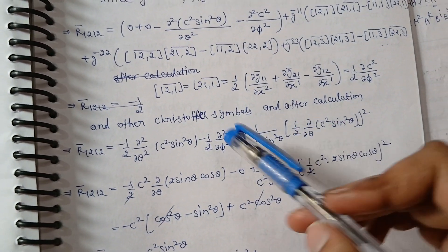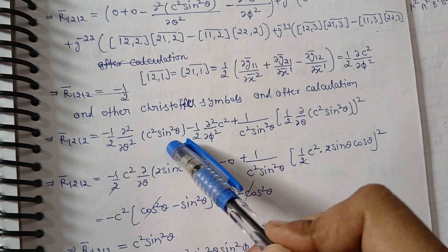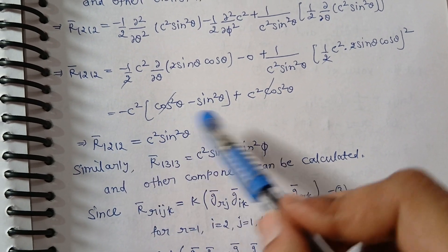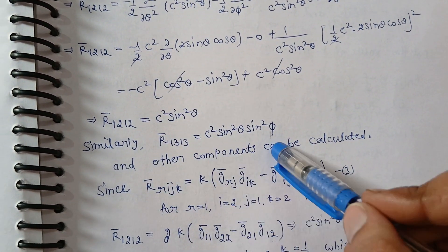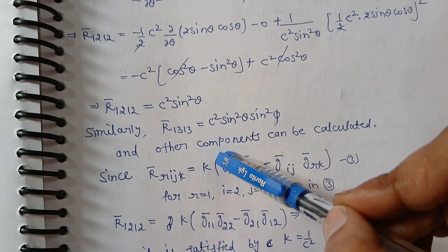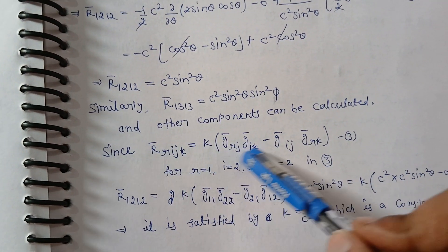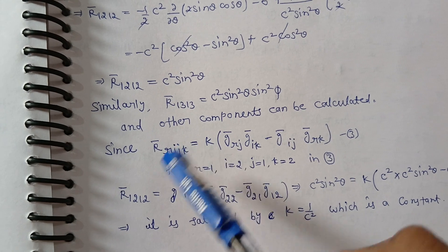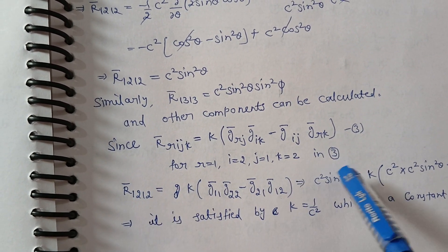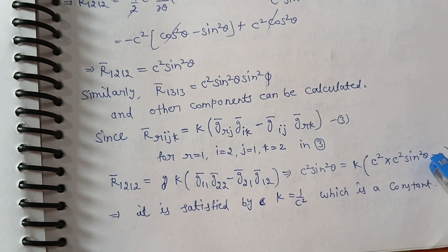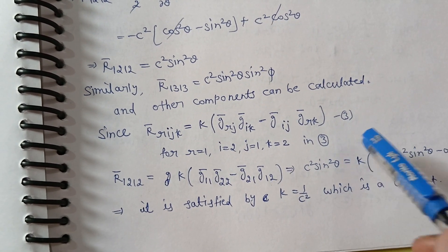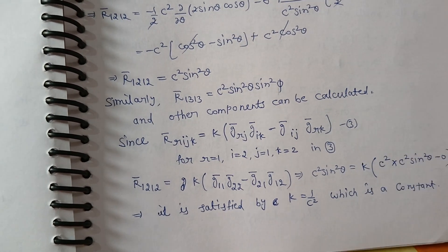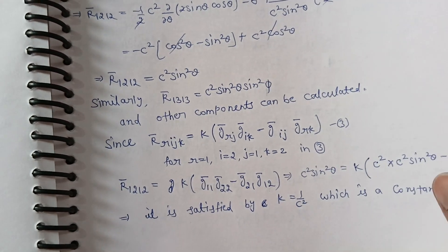Substituting the metric values, we compute the Christoffel symbols and then calculate the Riemann curvature components R-bar_1212. There are 6 independent components total; 2 are computed here and 4 others follow by symmetry. Using the isotropic formula with R equals 1 and I equals 1, we substitute the value of R_1212, divided by c² and sin²theta. These values satisfy the condition when K equals 1/c², which is constant. Therefore the Riemannian curvature of this hypersphere V3 is 1/c², a constant.